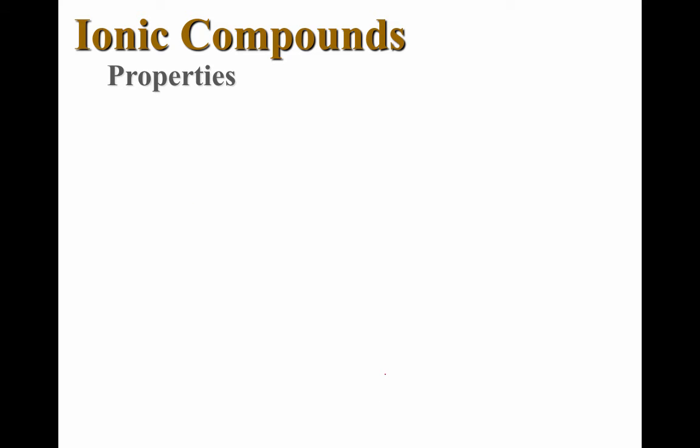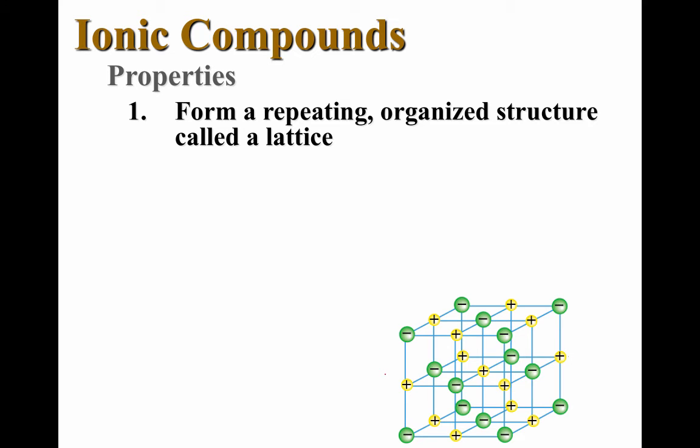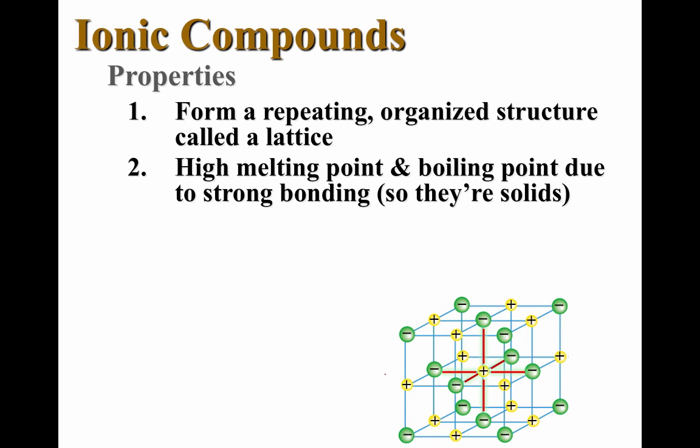The last thing we're going to look at are the characteristics or properties of ionic compounds. The first property is that ionic compounds form a repeating organized structure known as a lattice. In the lattice structure you'll notice that all the positive ions are surrounded by negative ions and vice versa. It's not simply made of two lithium ions and one sulfide ion. It's not simply made of one positive ion with one negative ion. But literally trillions upon trillions of these ions all organized together in a repeating lattice. This lattice helps us understand the next property.